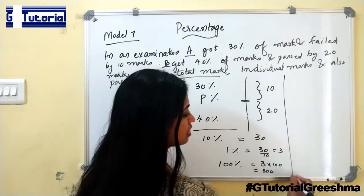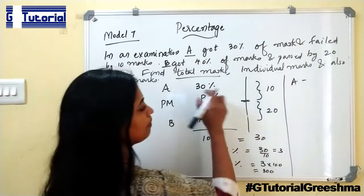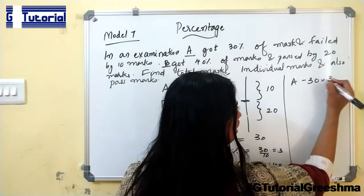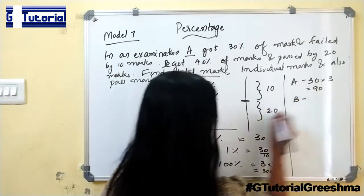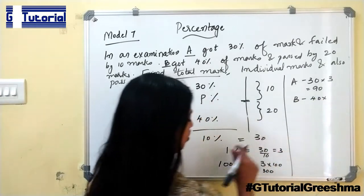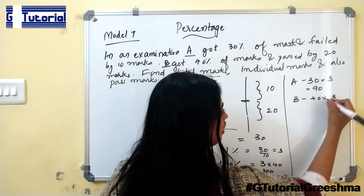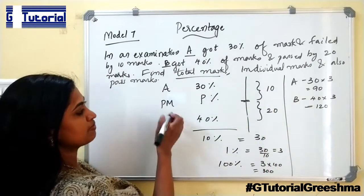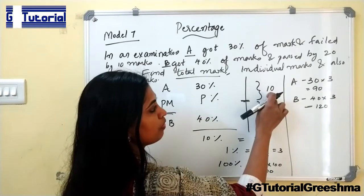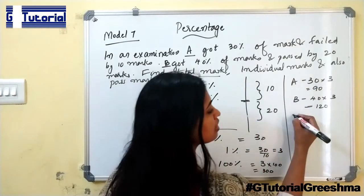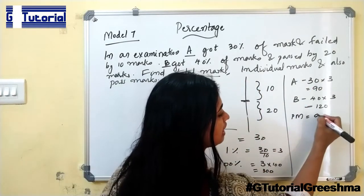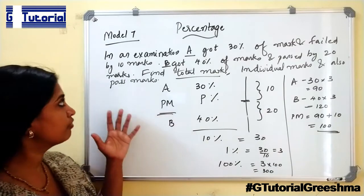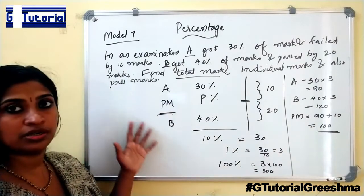Next, individual marks. A got 30 percentage marks, so 30 into 1 percentage equals 3, so 30 into 3 — A got 90 marks. B got 40 percentage, so 40 into 3, so 120 marks. Next, we have to find the pass mark. Pass mark is 10 marks more than A's mark. A got 90 marks, so pass mark is 90 plus 10, which is 100. This is the type of examination model.